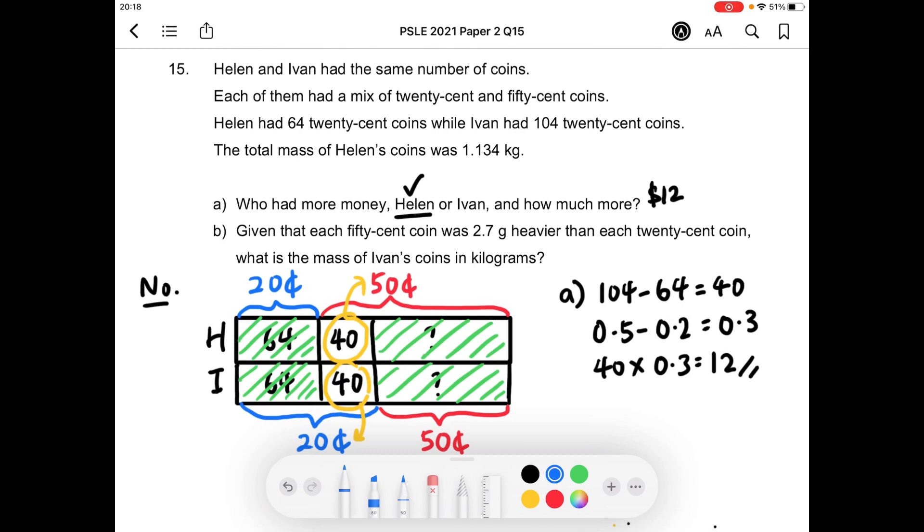Moving on, the total mass of Helen's coins was 1.134 kg. Part B, given that each 50 cent coin was 2.7 grams heavier than each 20 cent coin, what is the mass of Ivan's coins in kilograms?